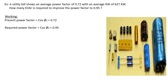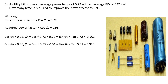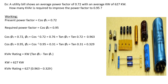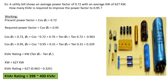The present cos phi is 0.72, so phi1 is the angle for 0.72. The desired cos phi is 0.95, so phi2 is the angle for 0.95. We calculate tan(phi1) and tan(phi2), then put all the values into the formula. Our answer is 398 kVAR, which can be rounded up to 400 kVAR — this is the rating for the capacitor bank.